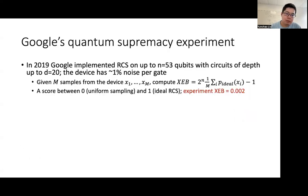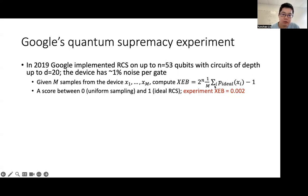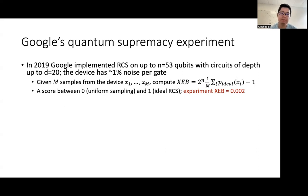In 2019, Google implemented random circuit sampling on up to 53 qubits with depth 20, and their device has roughly 1% noise per gate. In their experiment, given m samples from the device, they compute the measure called linear cross entropy, which is a simple linear function of the ideal output probabilities corresponding to these samples. Roughly speaking, this quantity is a score between 0 and 1, where 0 means trivial uniform sampling and 1 means perfect sampling from the ideal experiments. In Google's experiment, they achieved a score of 0.002, which is indeed very far from ideal, but nevertheless achieves a tiny score.